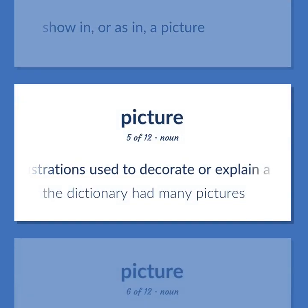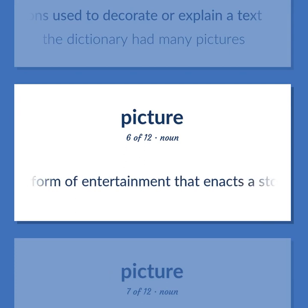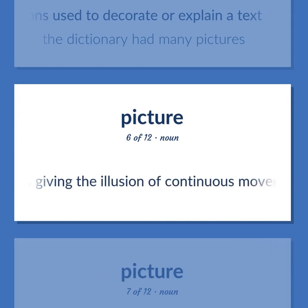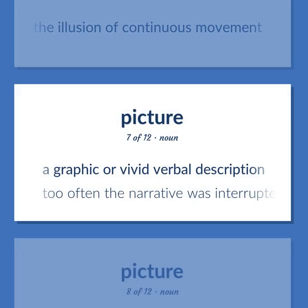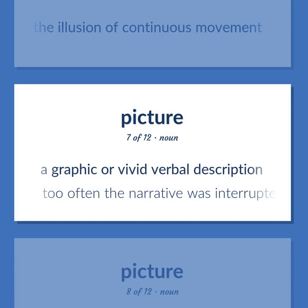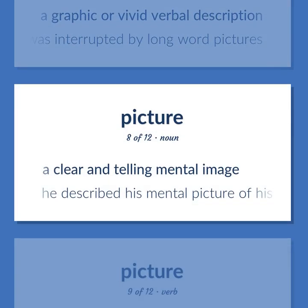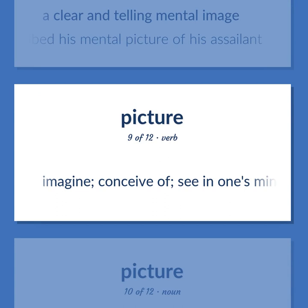Picture: Illustrations used to decorate or explain a text. The dictionary had many pictures. A form of entertainment that enacts a story by sound and a sequence of images giving the illusion of continuous movement. A graphic or vivid verbal description. Too often the narrative was interrupted by long word pictures. A clear and telling mental image. He described his mental picture of his assailant. Imagine; conceive of; see in one's mind.